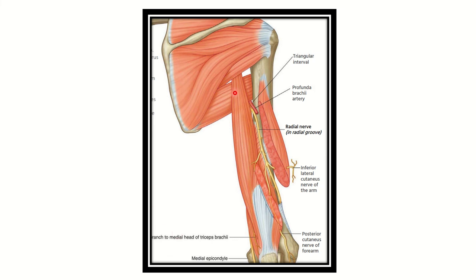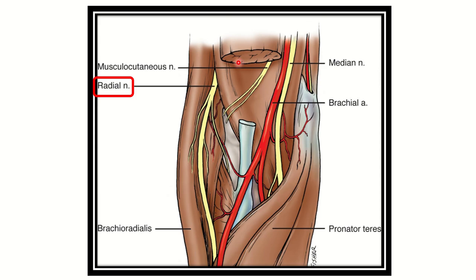In relation to the humerus, first of all in the upper part the radial nerve leaves the axilla through the triangular space with the profunda brachii artery, then it passes through the radial groove, and following that it enters the anterior part of the humerus. In the second picture we can see the radial nerve coming from behind.